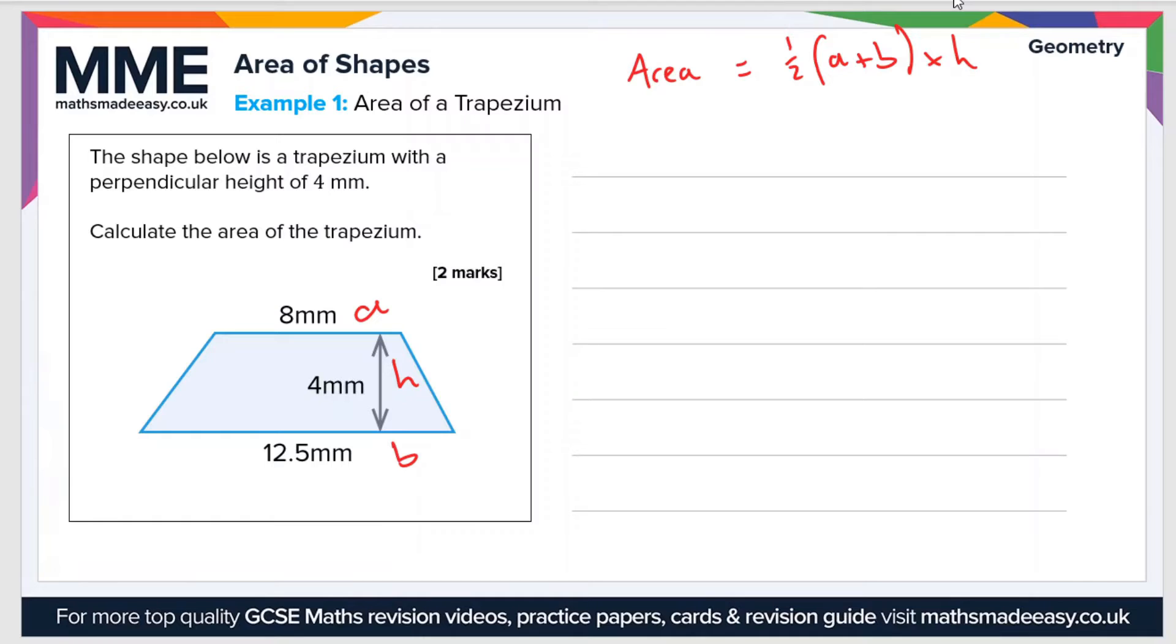h is the perpendicular height. So if we plug all these values in—let's just abbreviate area to A—then we have a half lots of 8 plus 12.5 times 4. Then this simplifies to half times 20.5 times 4, and that is equal to 41 millimeters squared. So our units are millimeters squared because a, b, and h are all given in millimeters.